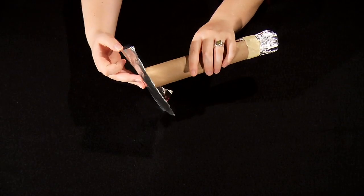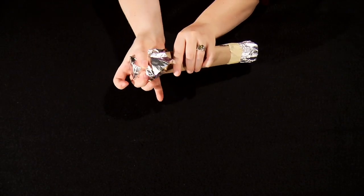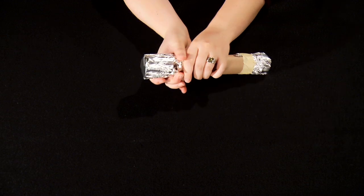This foil square can now be wrapped around the other end of the paper towel tube in the same way as before, but this time do not tape it into place right away.